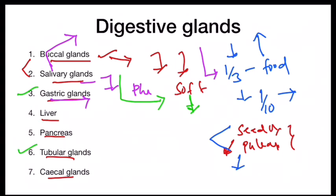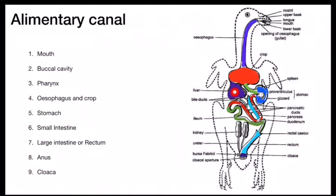The liver is a very large gland in the body and is a bilobed gland with a right lobe and a left lobe, the right lobe being larger. The gall bladder is absent in birds — one of the modifications for their avian mode of life. The right lobe and left lobe form hepatic ducts, which open independently into the duodenum of the intestine.